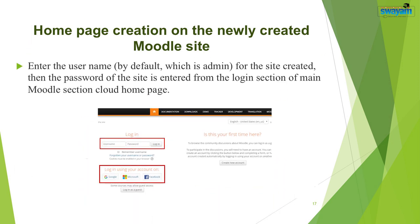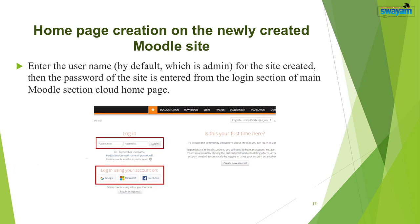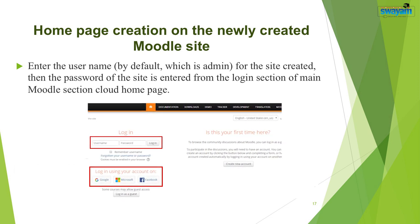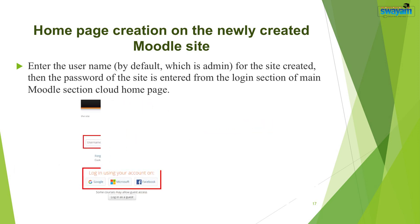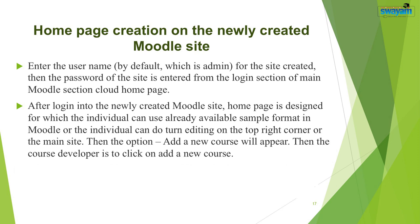Enter the username — by default it is 'admin'. Then enter the password from the login section of the main Moodle Cloud homepage. After logging into the newly created Moodle site, design the home page using the already available sample format or by turning editing on at the top right corner of the main site. The option 'Add a new course' will appear, and the course developer is to click on it.